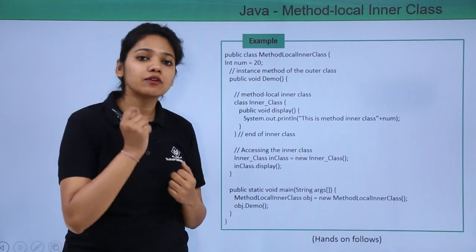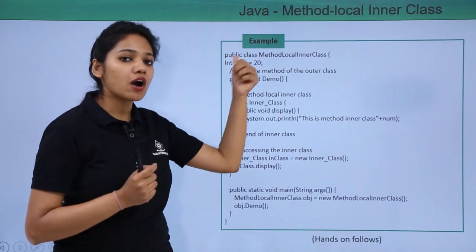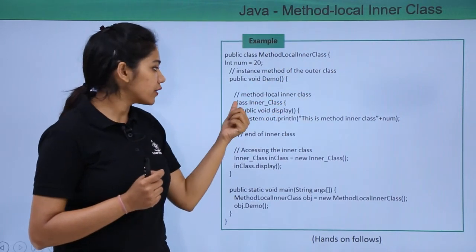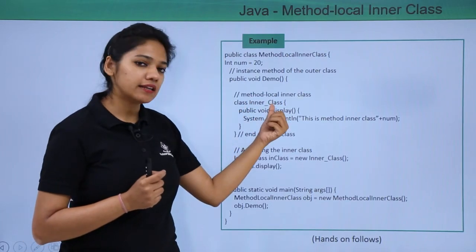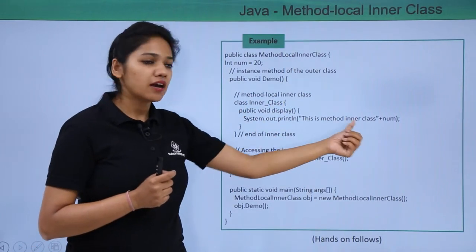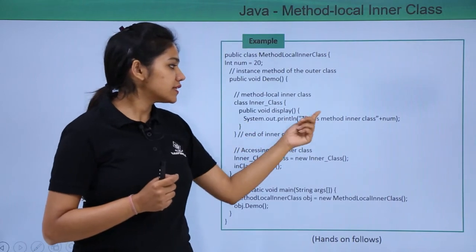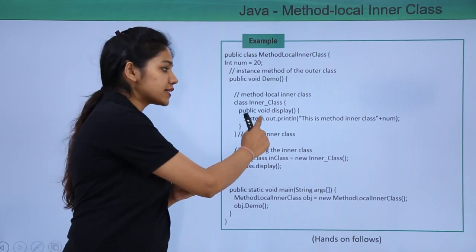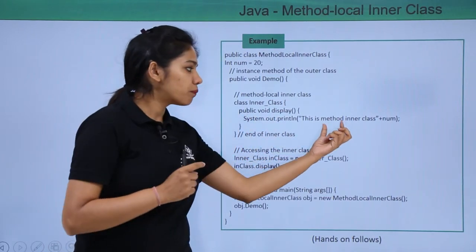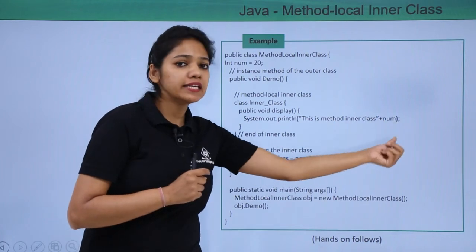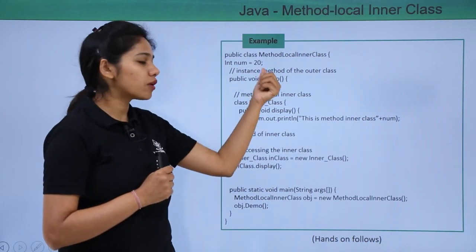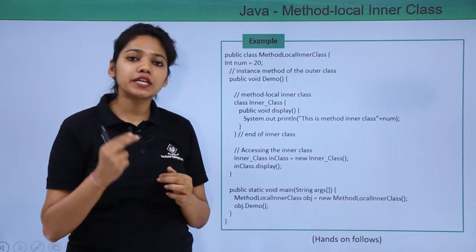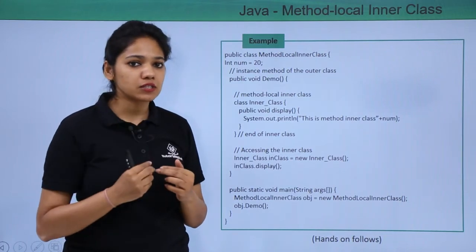When you declare a nested or inner class within a method of the outer class, it is called a method local inner class. So here we have created a class called inner class. Inside this class we have created a display method that prints the message 'this is method inner class' plus the integer value retrieved from our instance variable num.